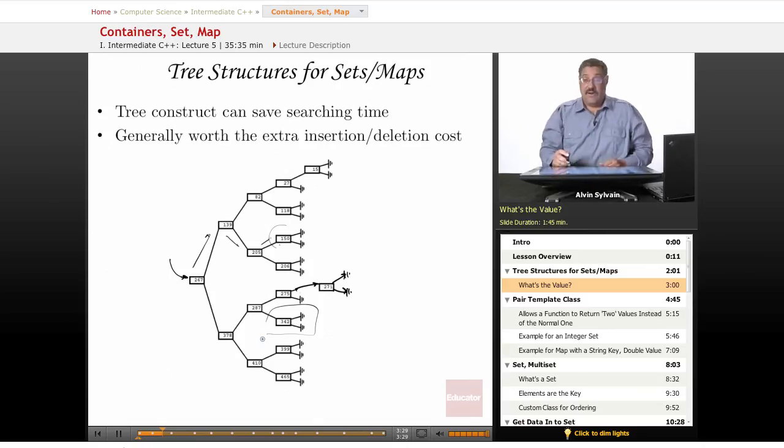With a binary tree we start here, is it 267? No, it's greater than 267 we go down here, less than this, greater than that, so there it is. One, two, three, four searches, very fast. There are other types of trees, you could have three nodes instead of two.